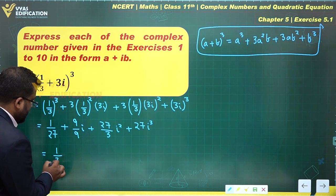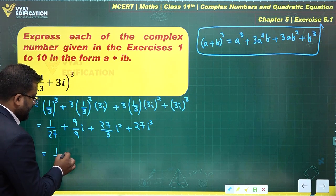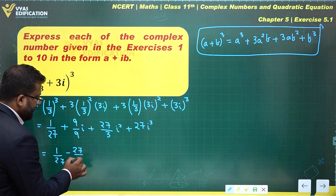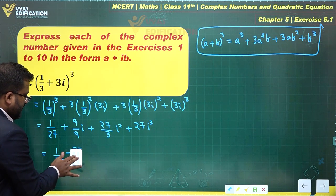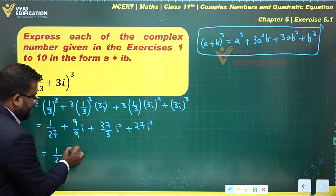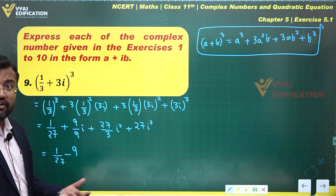This will become a real part which will get added with this 1/27. Let's bring them together, -27/3. And 27/3 can be simplified as 9, so let's write it as 27/3 is simply 9.